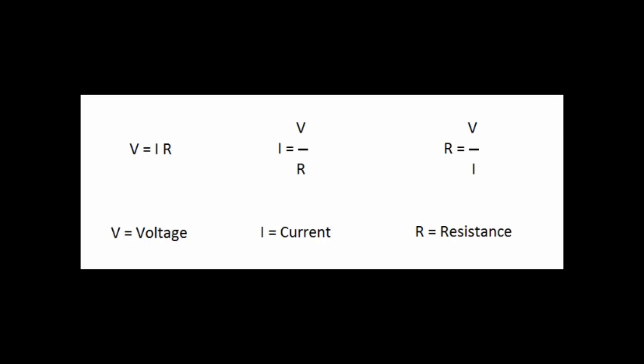Ohm's law is represented by the equation V equals IR where V is the voltage, I is the current and R is the resistance. This equation can also be rearranged to be I equals V divided by R and R equals V divided by I.